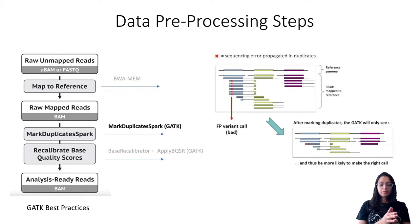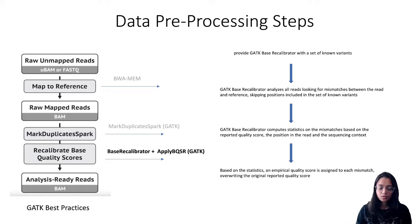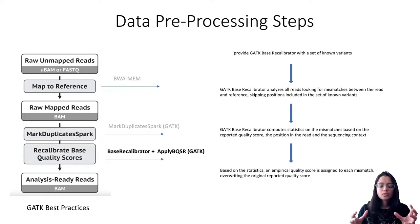For the duplicate marking step we will use the MarkDuplicatesSpark tool from GATK, which both marks duplicates and sorts the alignment files. The last step in data pre-processing is to recalibrate base quality scores. Variant calling algorithms rely heavily on quality scores assigned to individual bases in each sequencing read, since the quality score indicates how much we trust a particular base call at that location.